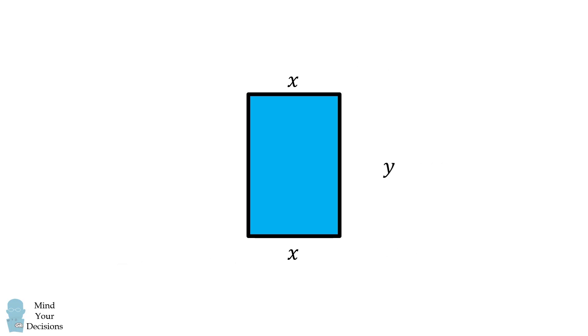Finally, we can calculate the area of the second rectangle in terms of x and y. Its area will be equal to x multiplied by y.